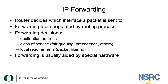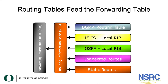Forwarding decisions are based on the destination address, the class of service, and other local requirements such as packet filtering. Forwarding is usually aided by special hardware. As you can see from the diagram on the screen, different routing tables feed the forwarding table.